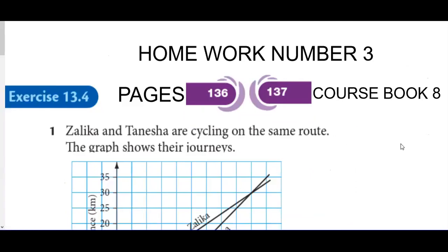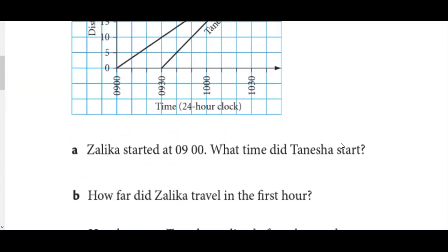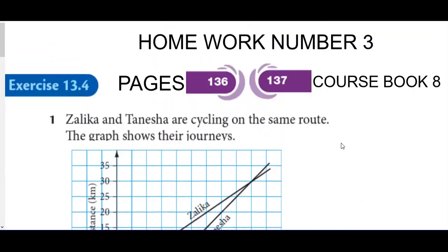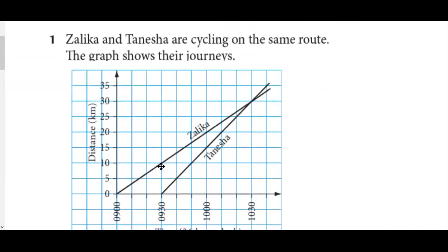We have homework number three, from course book eight, pages 136 and 137, exercise 13.4. This homework is all about graphs in our daily lives — real life graphs. We have two people here: Zalika and Ternesha. They are cycling on the same route, meaning they are going to the same destination.